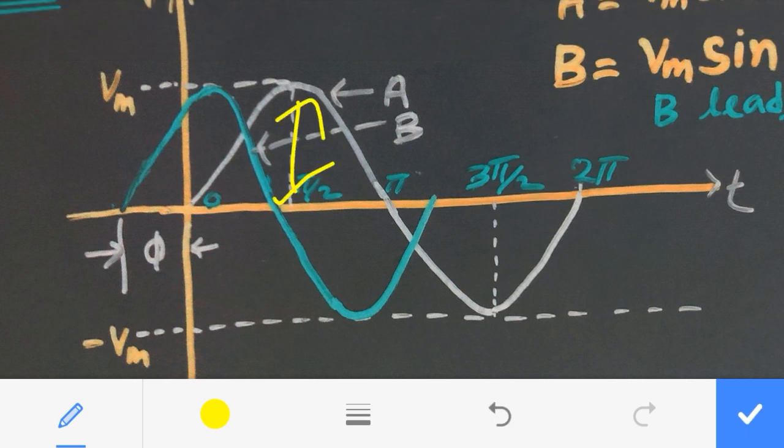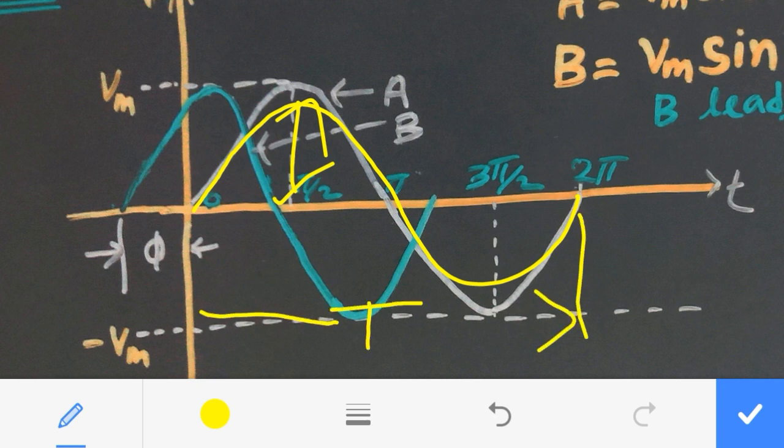This is the maximum value. This is the waveform from 0 to 2 pi. This is the time period, the time taken to complete one cycle.